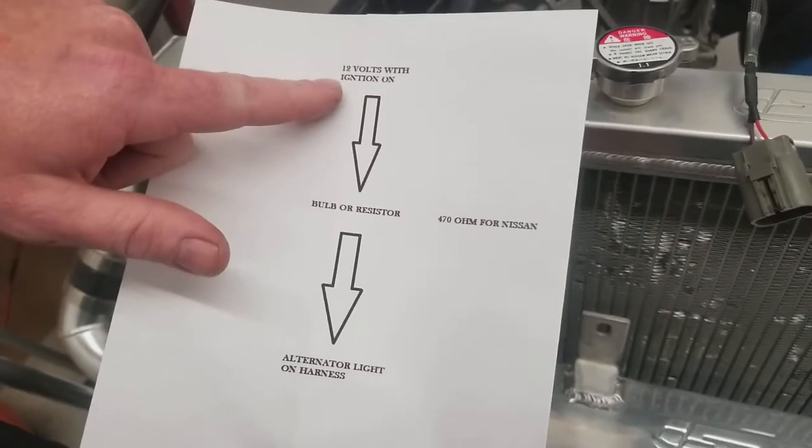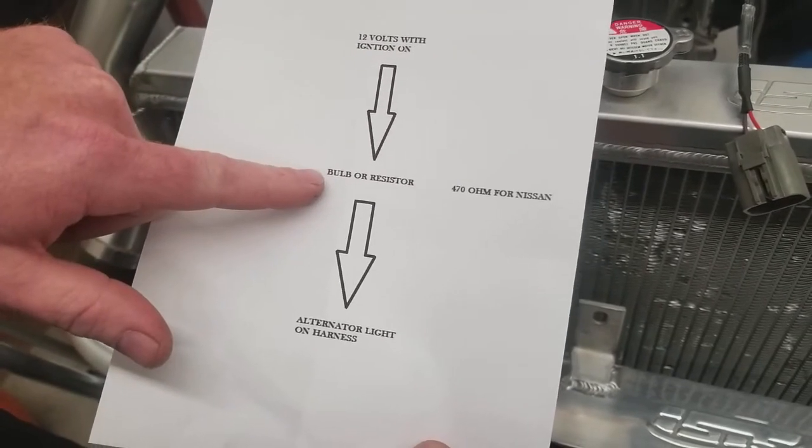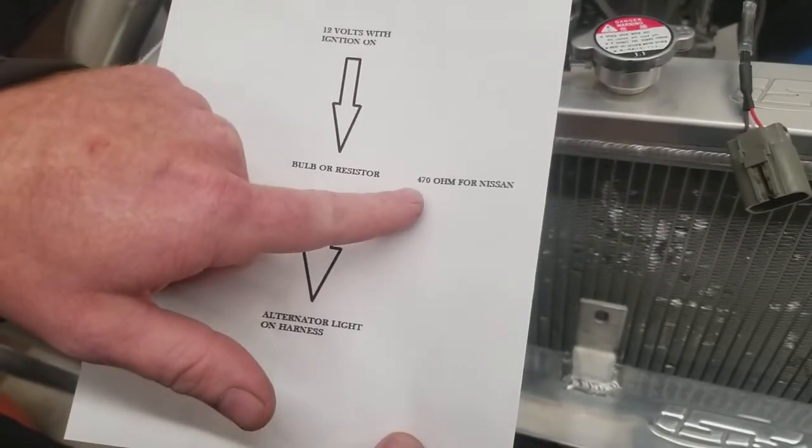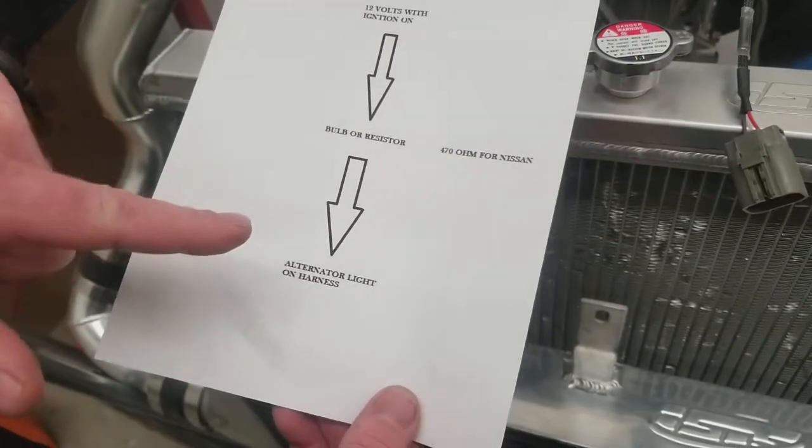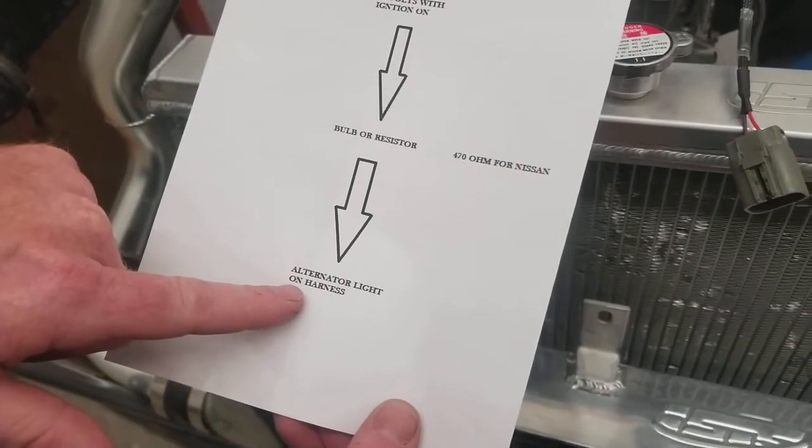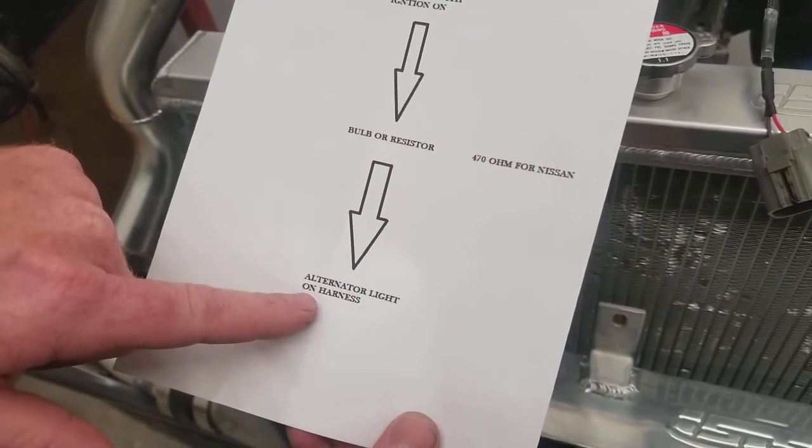12 volts ignition on will be on one side of the bulb or the resistor. You're going to use a 470 ohm resistor for the Nissan alternator. And it's going to connect on the other side to the alternator light wire on our harness.